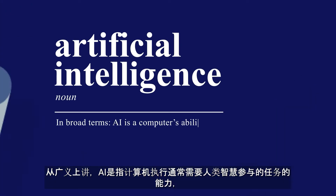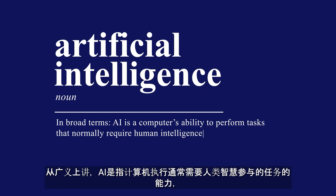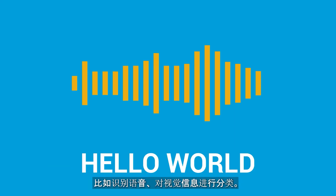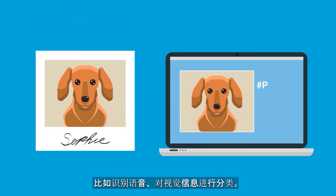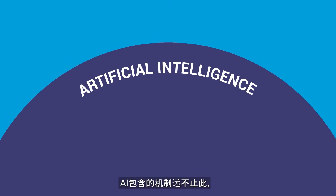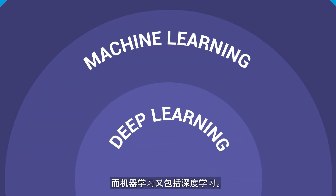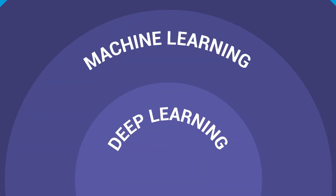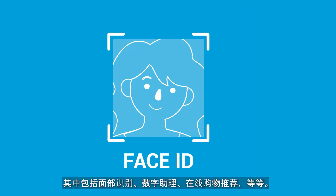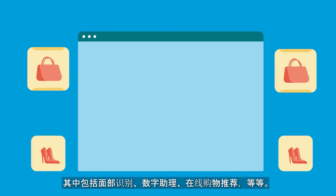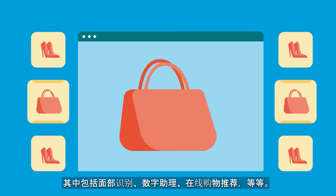In broad terms, AI is a computer's ability to perform tasks that normally require human intelligence, like recognizing speech and categorizing visual information. AI encompasses a much wider range of mechanisms and is the general field that includes a subset called machine learning, which in turn includes deep learning. AI algorithms are all around us, from Face ID and digital assistants to online shopping recommendations and so much more.